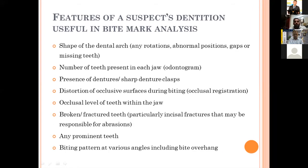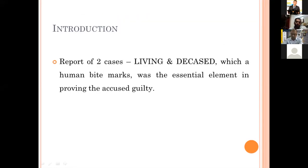Features of a suspect's dentition useful in bite mark analysis include the shape of the dental arch, the number of teeth present in each jaw, presence of dentures or sharp denture clasps, distortion of occlusal surfaces during biting, occlusion level of teeth within the jaw, broken or fractured teeth, any prominent teeth, biting pattern at various angles, including the bite overhang.